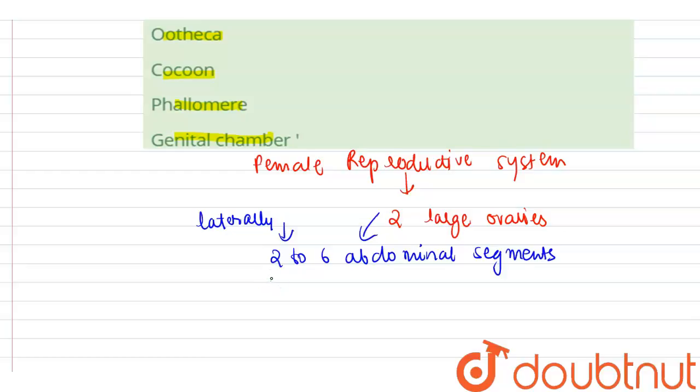A group of eight ovarian tubules forms one ovary, and they contain a chain of developing ova.